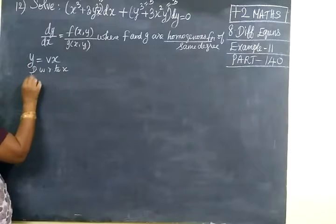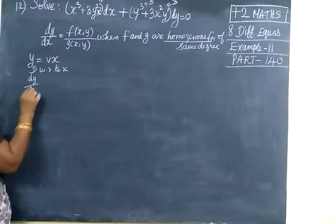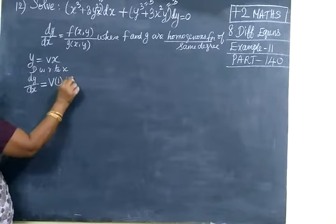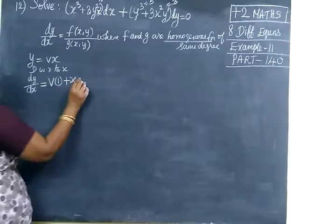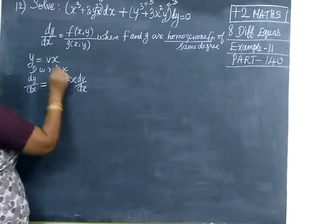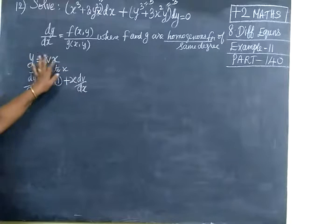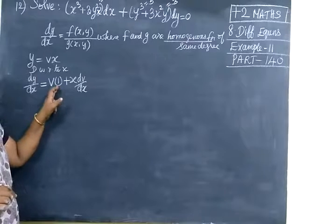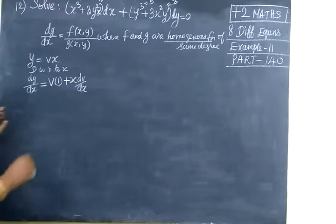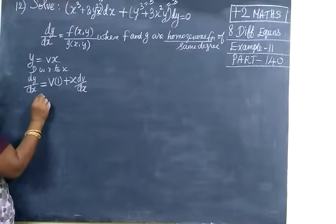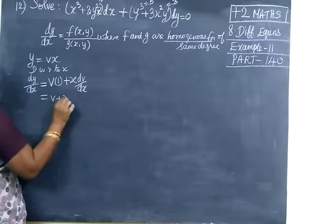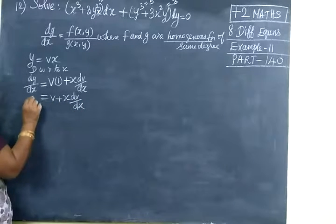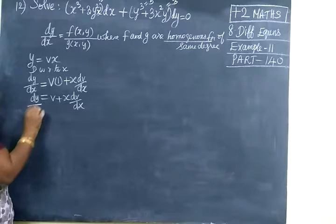Differentiate y equal to vx using the product rule: first function into differentiation of second function, plus second function into differentiation of first function. So you are getting dy by dx equal to v plus x into dv by dx. This is the standard form.